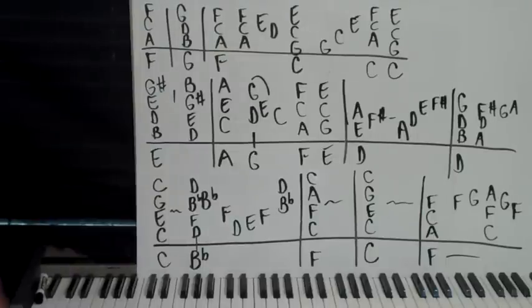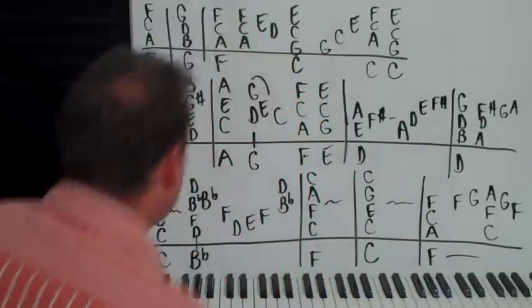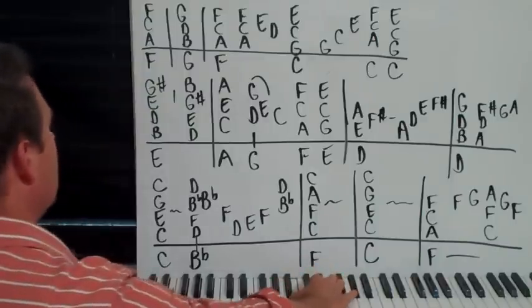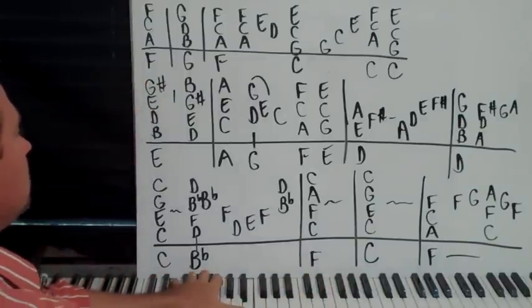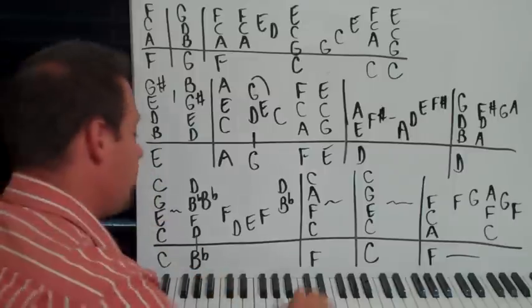All right, part four of Mona Lisa's and Mad Hatters by Elton John. Okay. B, D, E, G sharp. Left hands on an E octave. I'm going to play that chord two times.